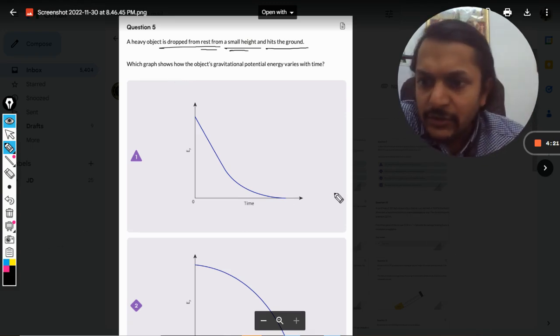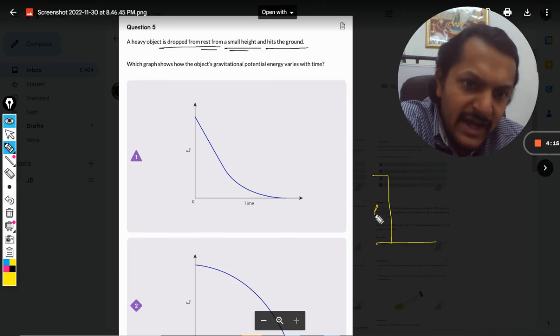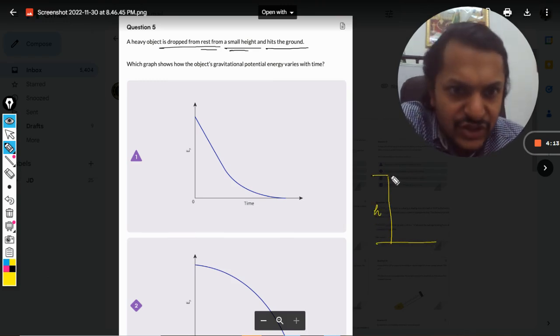So what is the diagram now? The diagram will look somewhat like this. Let us say this is the building and the height is capital H. So if the ball is now falling,